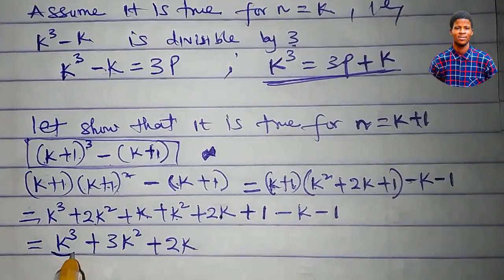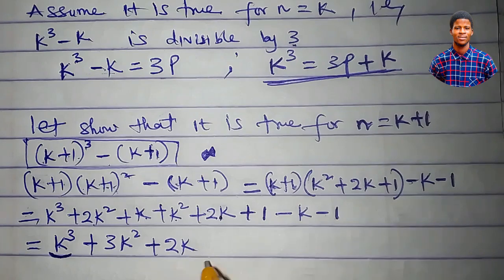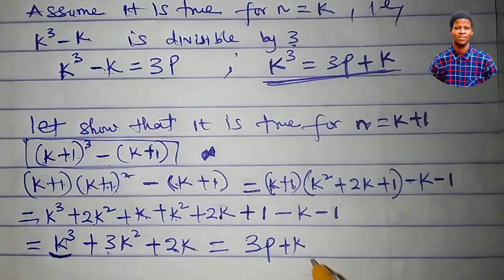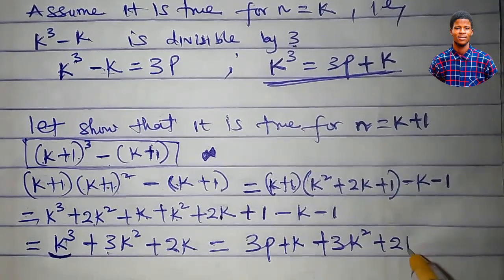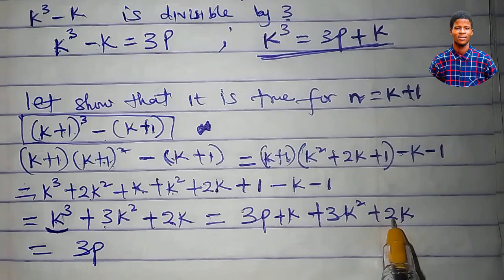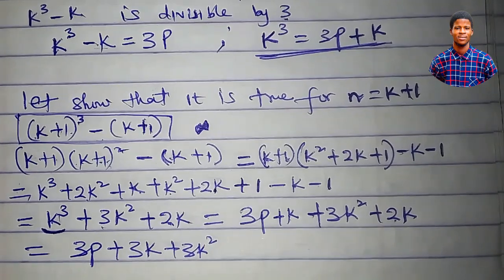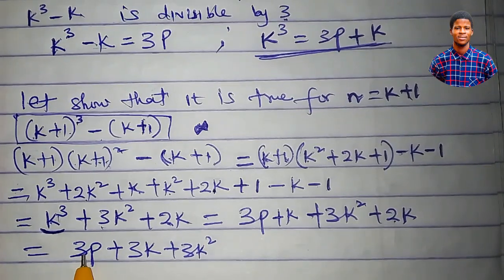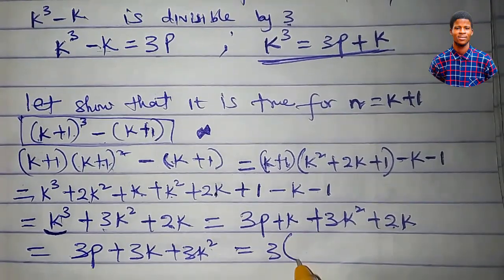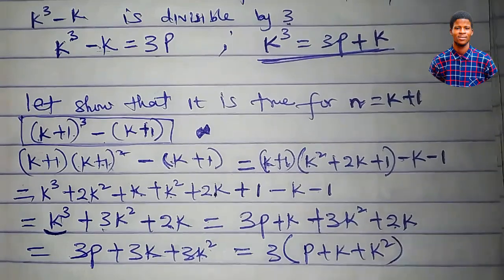Now, recall that we let k³ equal 3p plus k. Substituting in place of k³ gives us 3p plus k, plus 3k² plus 2k. Simplifying: k plus 2k is 3k. So we have 3p plus 3k plus 3k². You can see that 3 is common to all terms — factoring out 3 gives 3 times (p plus k plus k²). This completes the proof.